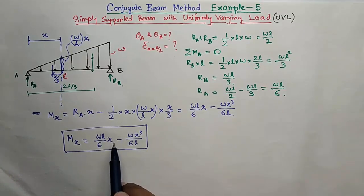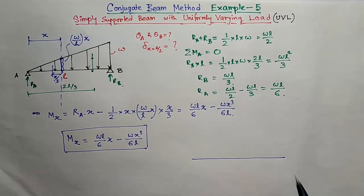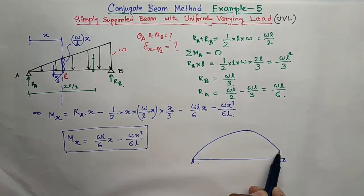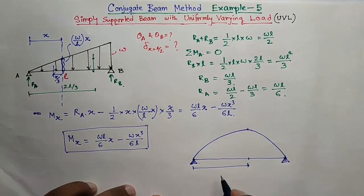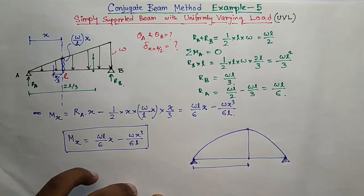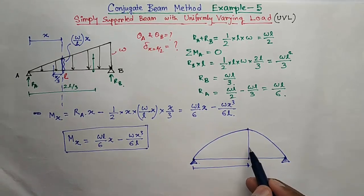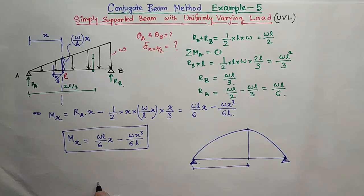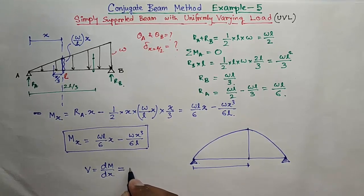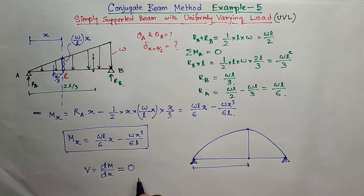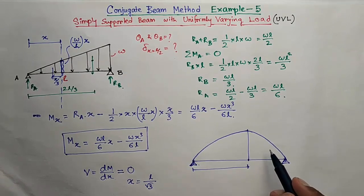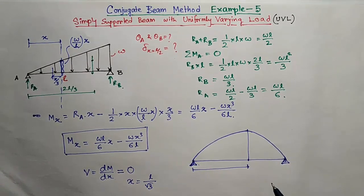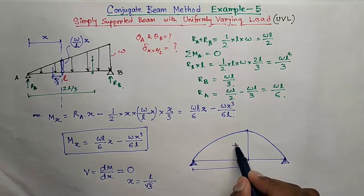You see this is a cubic equation. The moment diagram will be like this. You can find out where this point is at distance, but it is not necessary in our case. If you want to determine this distance, make the shear force, which is V equal to dM dx, equate this to zero. Then you can find out x, which will be x equal to L by root 3. So we got our moment diagram and it will be sagging moment, positive.